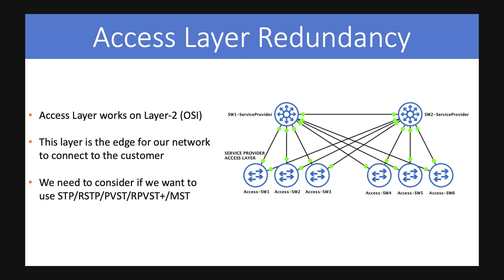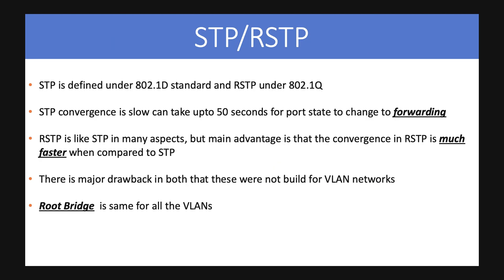The first redundancy we are going to talk about is access layer redundancy. The access layer works on Layer 2, as we all know. This is the edge of our network — the place from where we serve our customers, the endpoint of our network and the start of customer-end servicing. We need to consider one protocol out of the many spanning-tree-based protocols that are available.